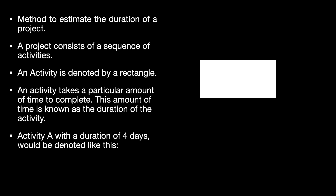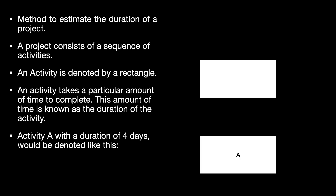So if we had an activity called A with a duration of four days, using the critical path method it'll look something like this. You have the activity in the rectangle with the name in the middle, and the number above which would signify the duration of the activity. Of course a project is more than one activity, because even if the project is small it would be impossible to complete it in one activity.